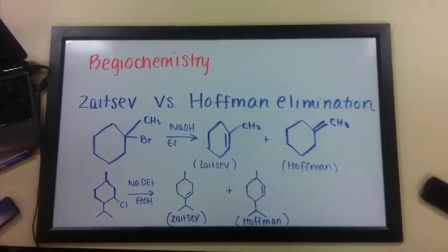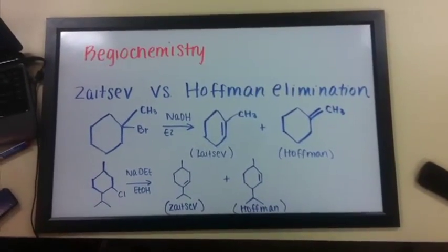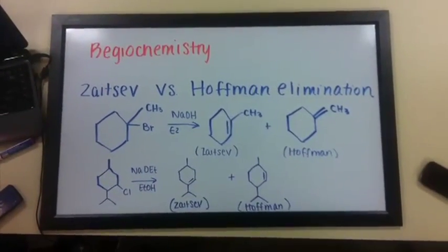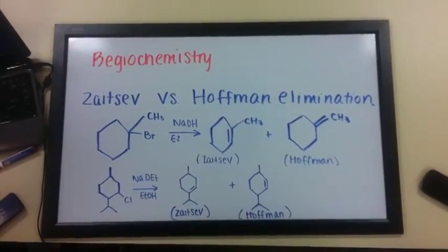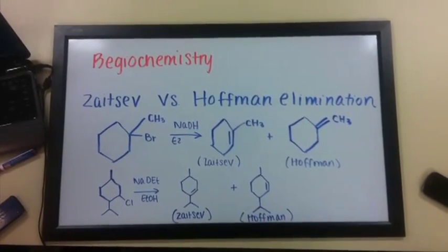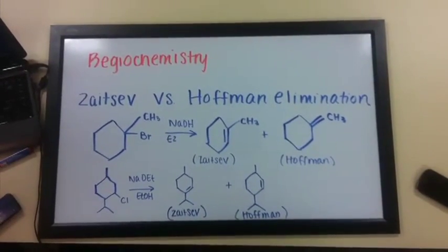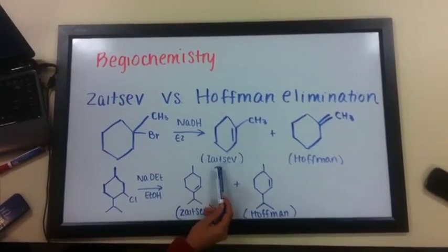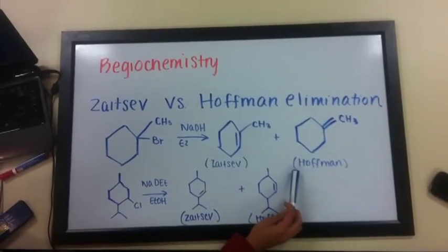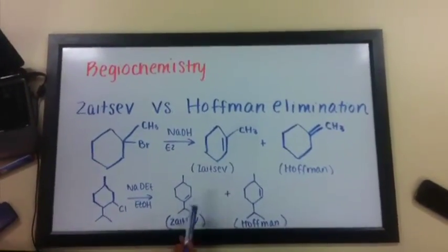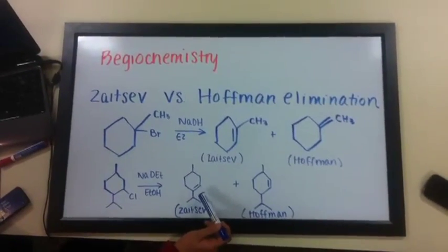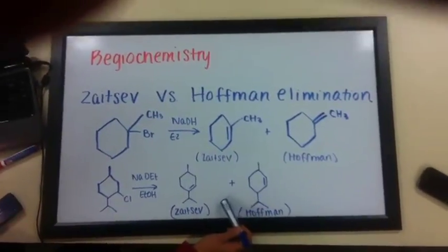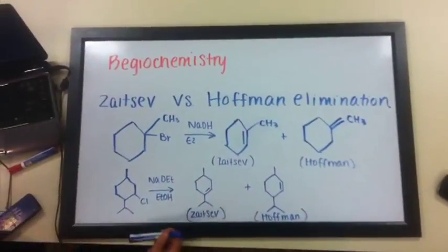In Zaitsev vs. Hoffman Elimination, we determine which product will be favored in the reaction by which product is more or less substituted. The Zaitsev product is more substituted and in this case is more stable than the less substituted Hoffman product. In this situation, the Zaitsev product is more hindered by stereochemistry than the Hoffman product, so the Hoffman product is favored over Zaitsev.